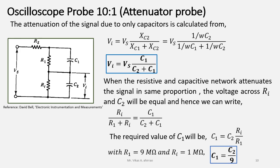That means, at the probe tip, we have to add two components: R1, that is a 9 megaohm resistor, and a trimming capacitor or adjustable capacitor C1 which should have the value of C2 upon 9. In total, these two components will provide and form the attenuator probe or 10:1 probe.